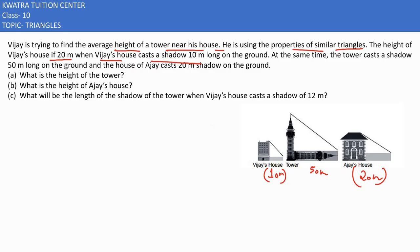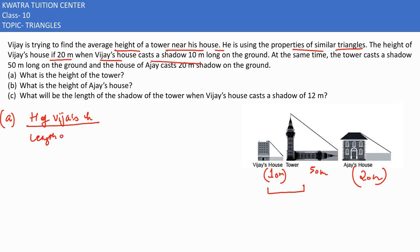Since they are casting shadows at the same time, we need to find the height of the tower. We can compare these two triangles because we have two corresponding angles in both triangles, and if they are similar, the ratio of their sides will be equal. So the height of Vijay's house divided by the length of shadow of Vijay's house is equal to the height of the tower divided by the length of shadow cast by the tower.